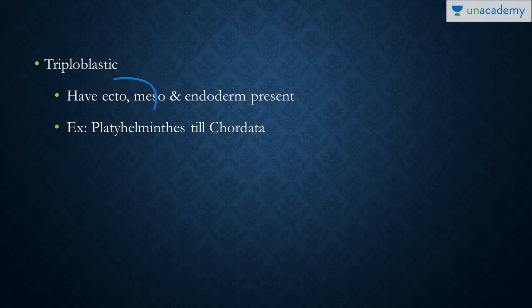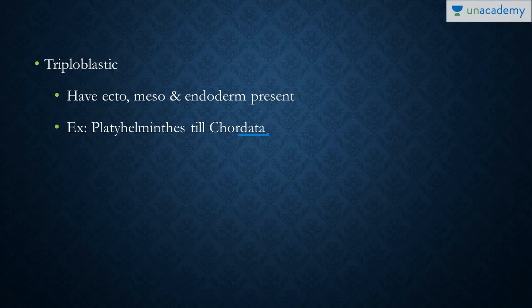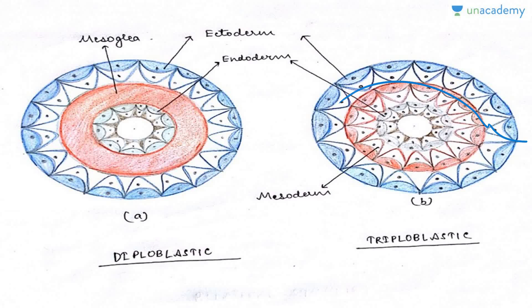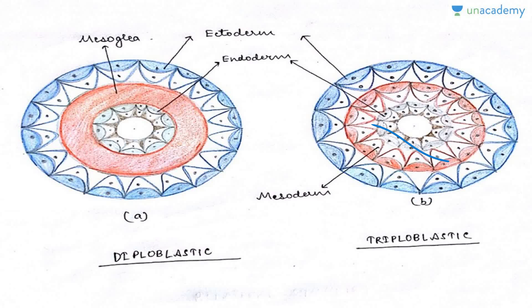In triploblastic organisms, we have the ectoderm, the mesoderm, and the endoderm. All the phyla from the flatworms — the Platyhelminthes — to the chordates are included in the triploblastic ones. The outer layer is the ectoderm, the middle reddish and whitish layer is the mesoderm — meso means middle — and the inner ones are the endoderm.